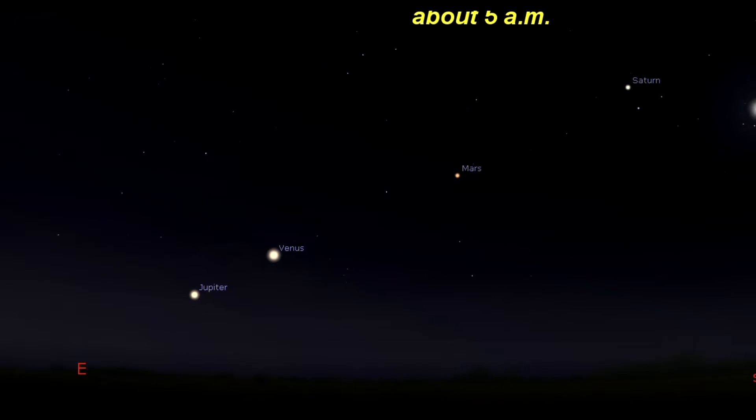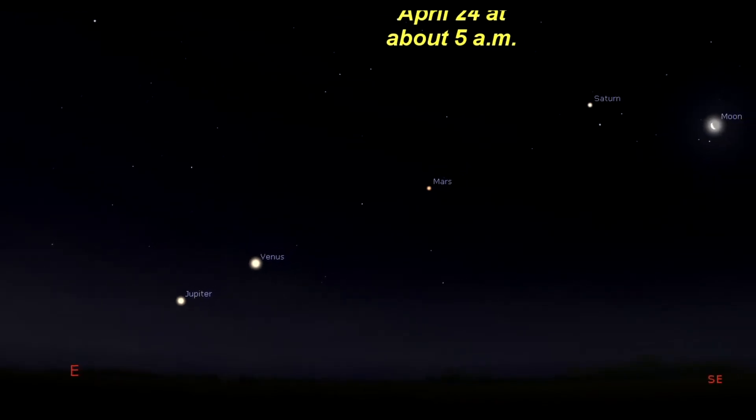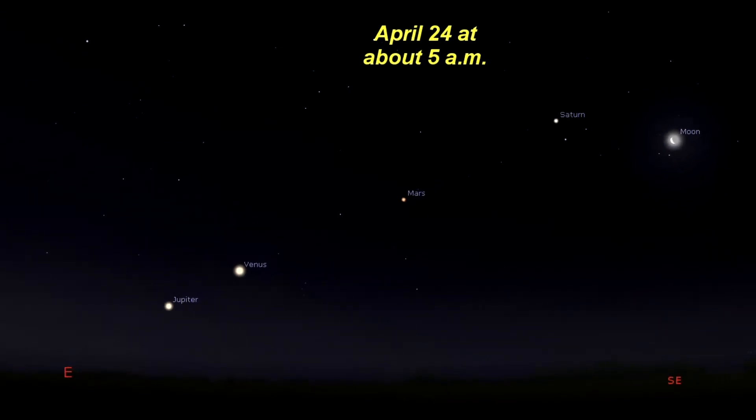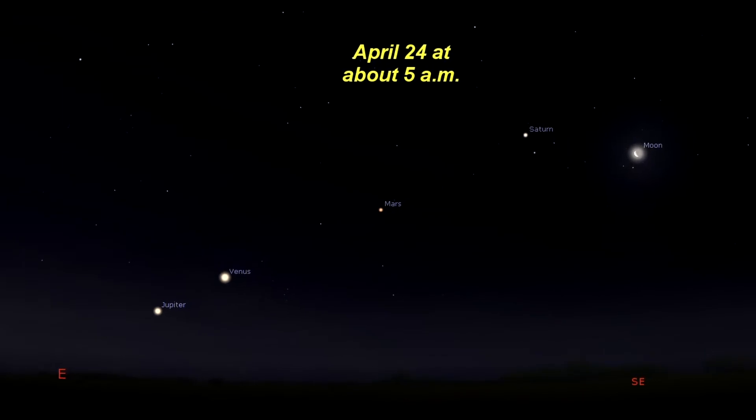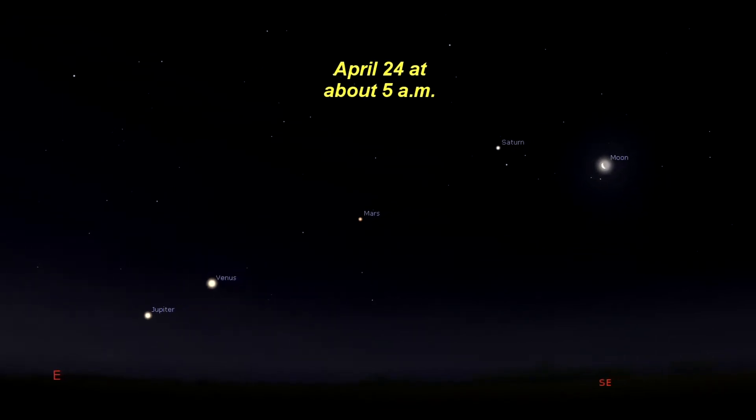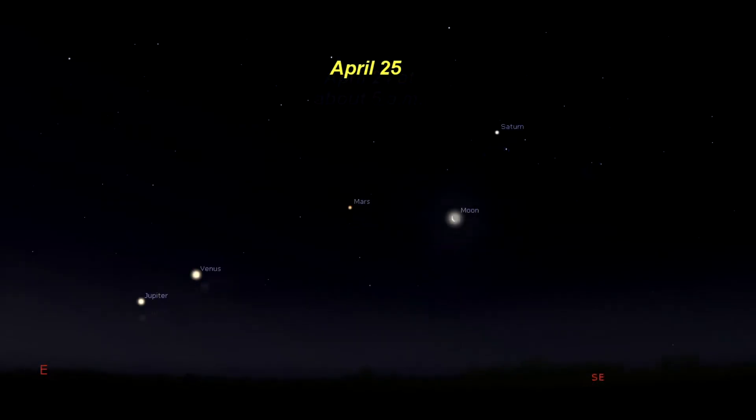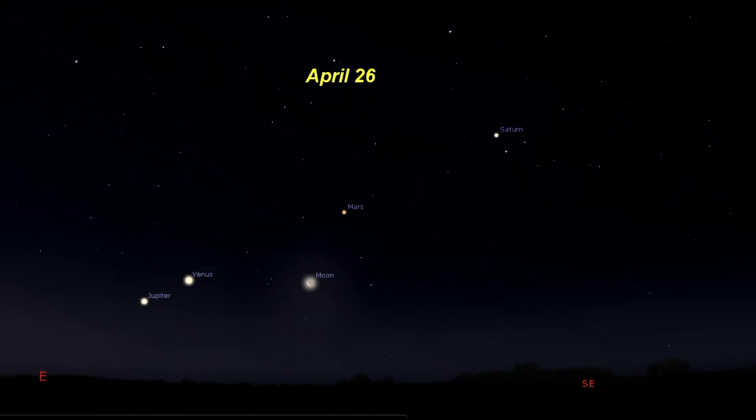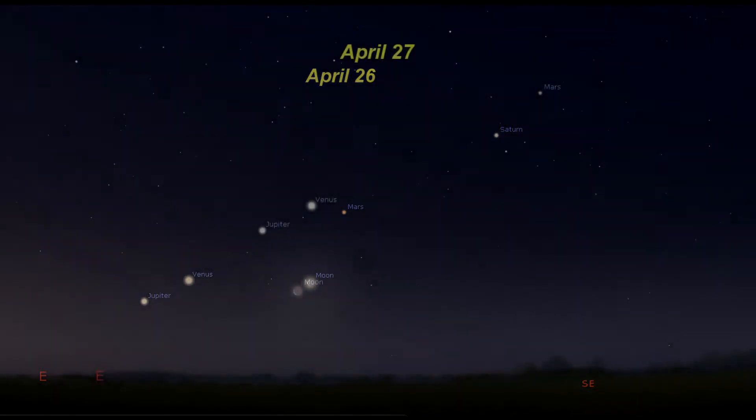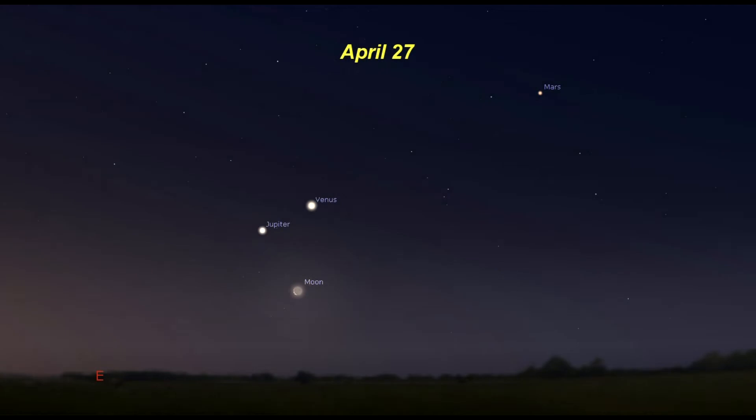Later in the month, the planet Jupiter will join this trio of planets, and the moon will also pass by, making for a beautiful gathering over several mornings. Watch for the moon to pass underneath and between Saturn and Mars on the 25th, and between Mars and Venus on the 26th, and then the moon will be a very beautiful thin crescent beneath Venus and Jupiter on the early morning of the 27th.